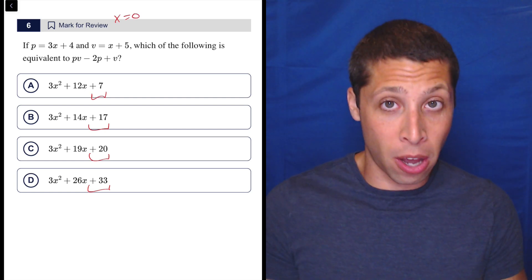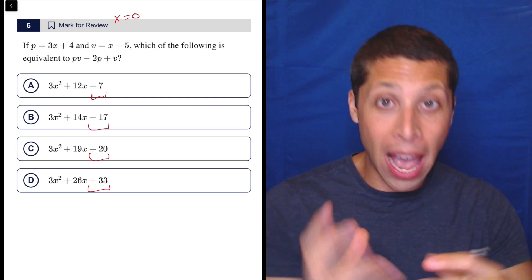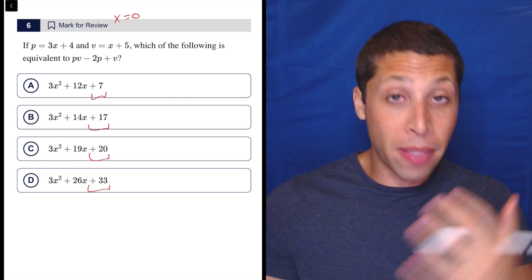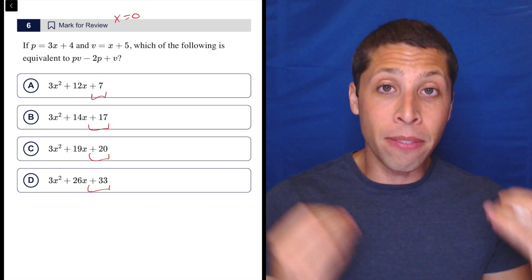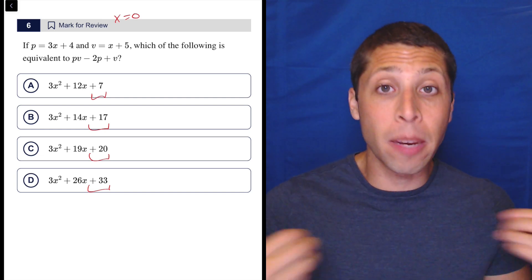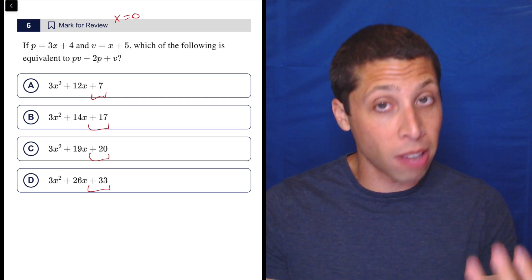So what that means, though, is that we're making a random number—X equals zero for the X, but the P and the V, since those are dependent on our value of X, we're not going to make random numbers for P and V. We're going to solve those out, right?